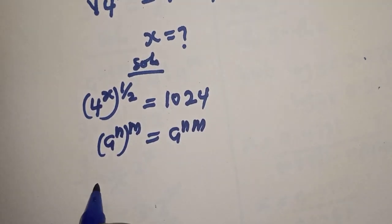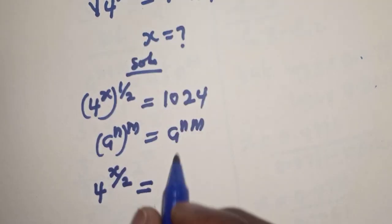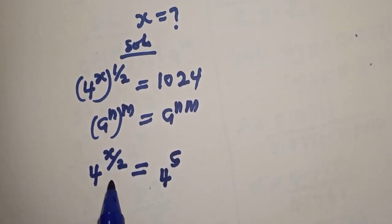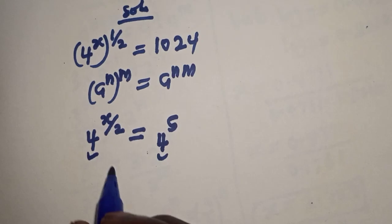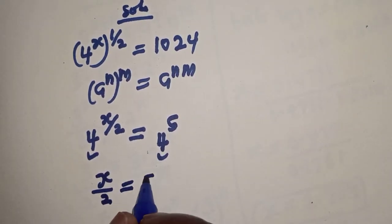Then, this is 4 raised to power s over 2 must be equal to 1024 is 4 raised to power 5. We have the same base 4. Base 4 will deal with the exponents. s over 2 is equal to 5.